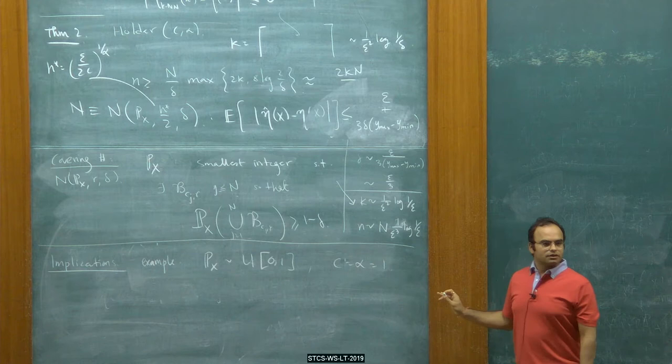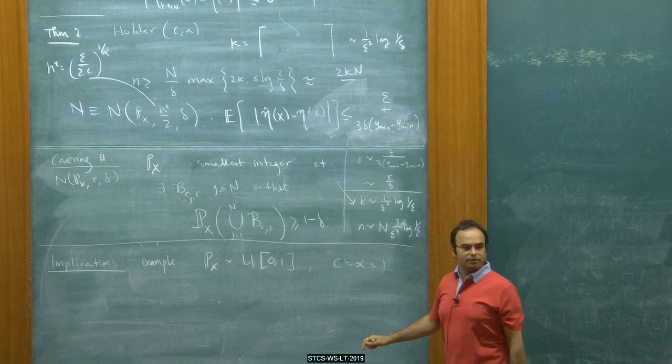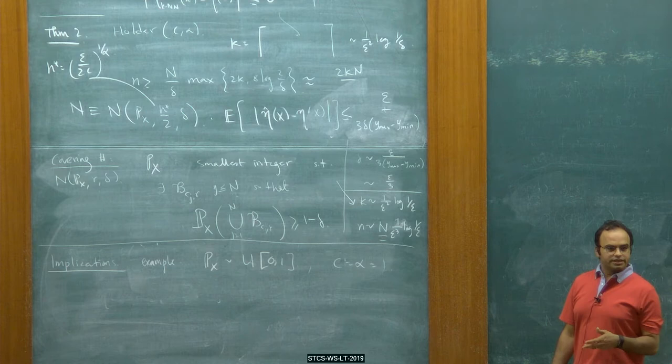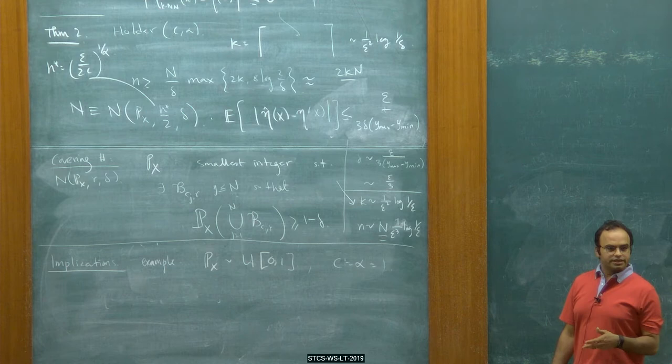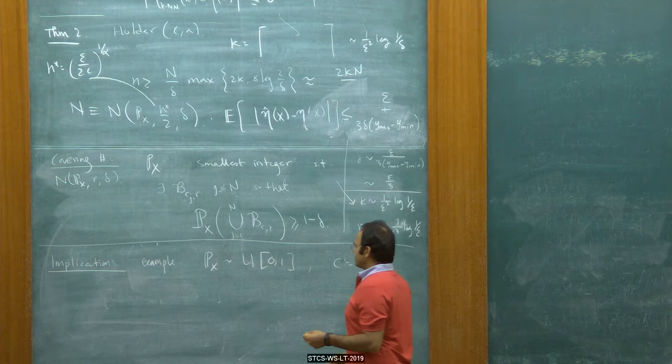And N should scale like the covering number capital-N times 2K over delta. So K scales like 1 over epsilon squared log(1/epsilon), and delta scales like epsilon. So effectively N scales like 1 over epsilon cubed times log(1/epsilon). And then there is the covering number capital-N. It's the small N — the number of samples — that we want to determine, to understand the scaling as a function of epsilon. K is my parameter, so it's not really dependent on the samples.